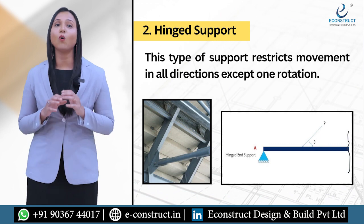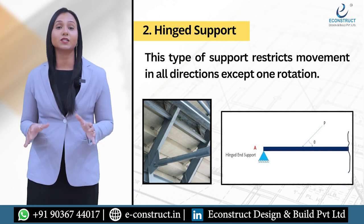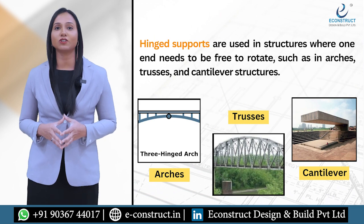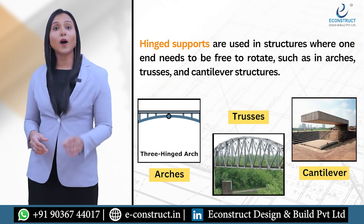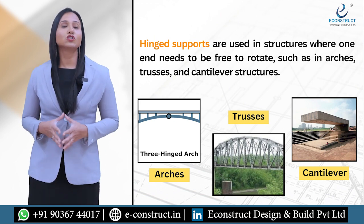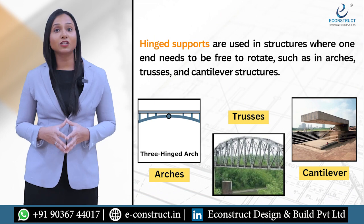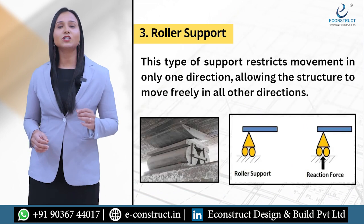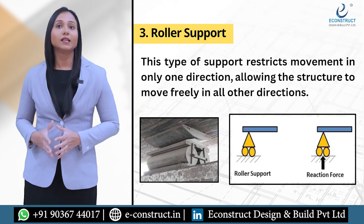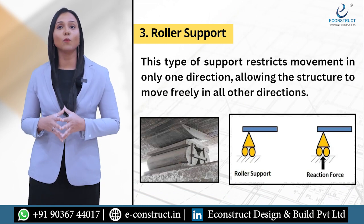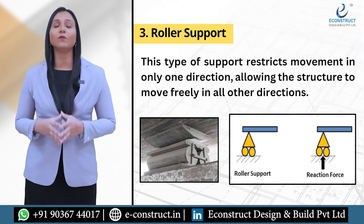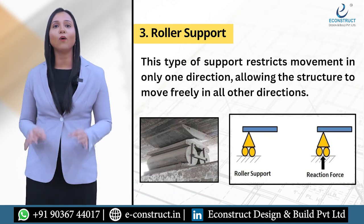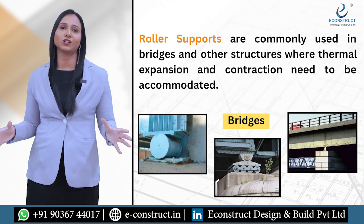The next one is hinged support. This type of support restricts movement in all directions except one rotation. Hinge supports are used in structures where one end needs to be free to rotate, such as in arches, trusses, and cantilever structures. The next one is roller support. This type of support restricts movement in only one direction, allowing the structure to move freely in all other directions.